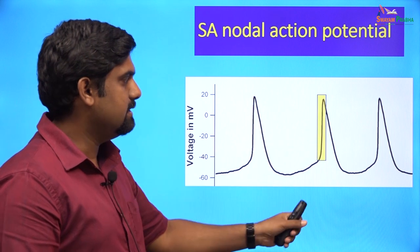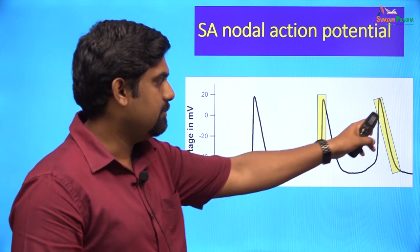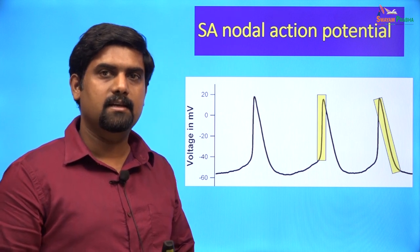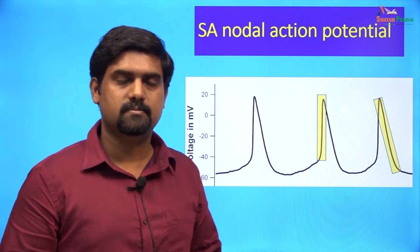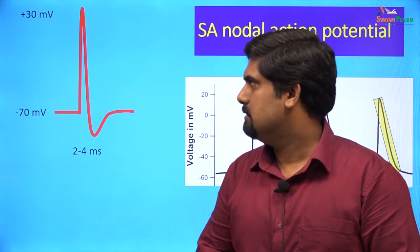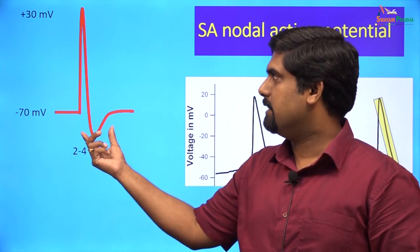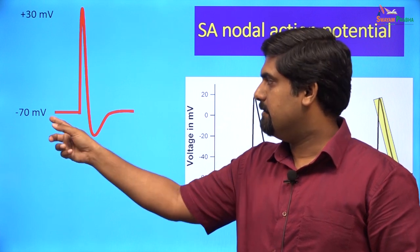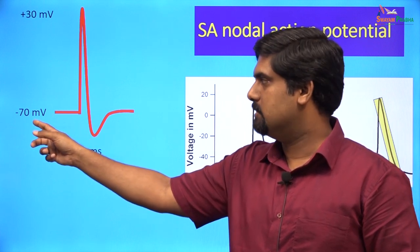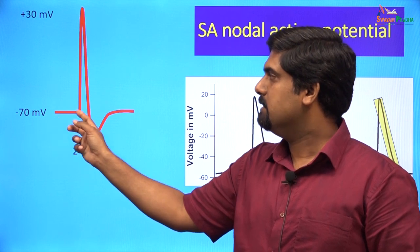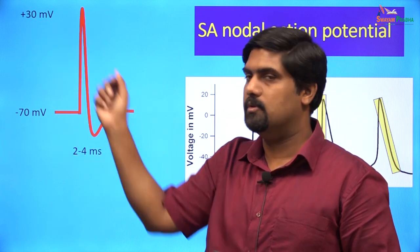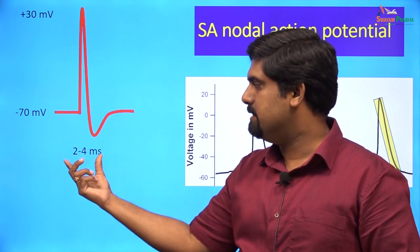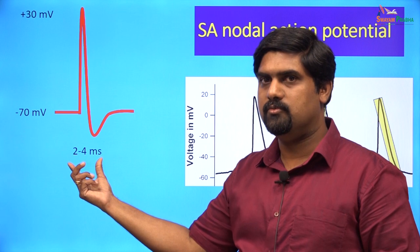This is the picture of a mouse SA nodal action potential. It has a depolarization phase and a repolarization phase, just like neuronal and skeletal muscle action potentials. In a neuronal action potential, there is a stable resting membrane potential of about minus 70 millivolts, and during depolarization the membrane potential reaches about plus 30 millivolts. These action potentials are very brief, lasting only about 2 to 4 milliseconds.